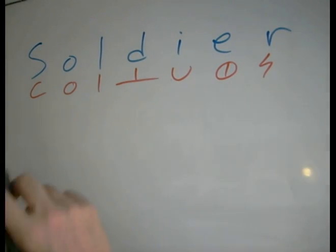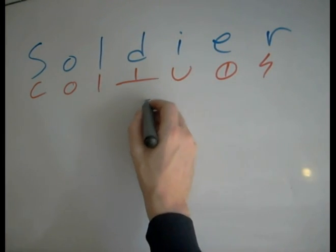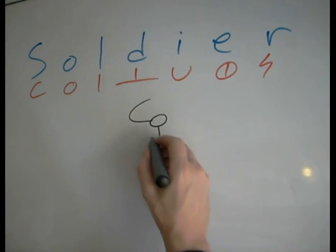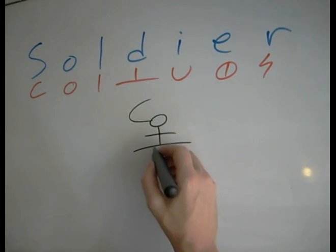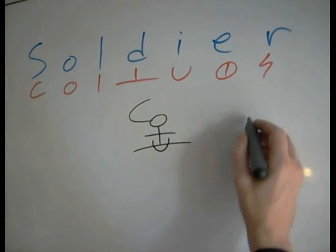Here we're going to do the word soldier. So let's look at the simplest possible combination first. S, O, L, D, I. This is the simple DI, actually.